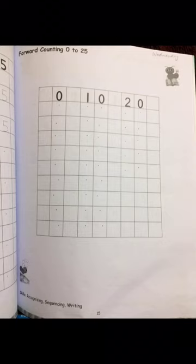Here, the question is Forward Counting 0 to 25. You have to write counting. We have to write 25. You can see page number 15. You have blocks here.